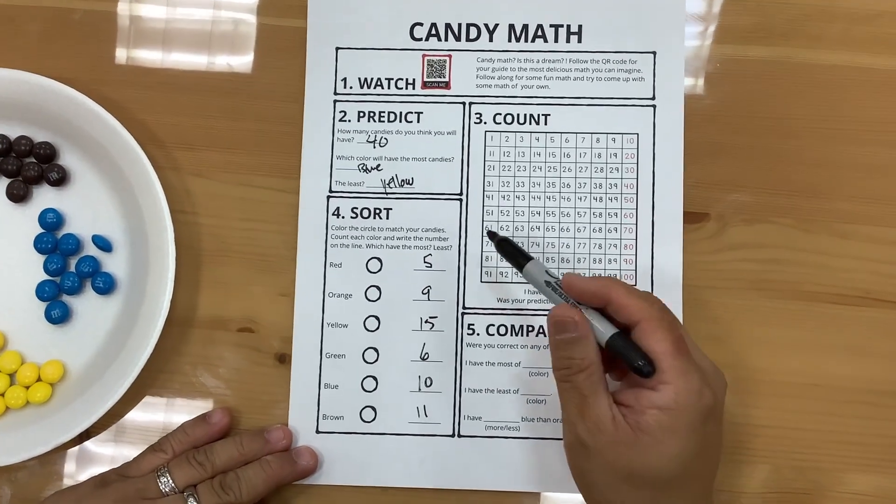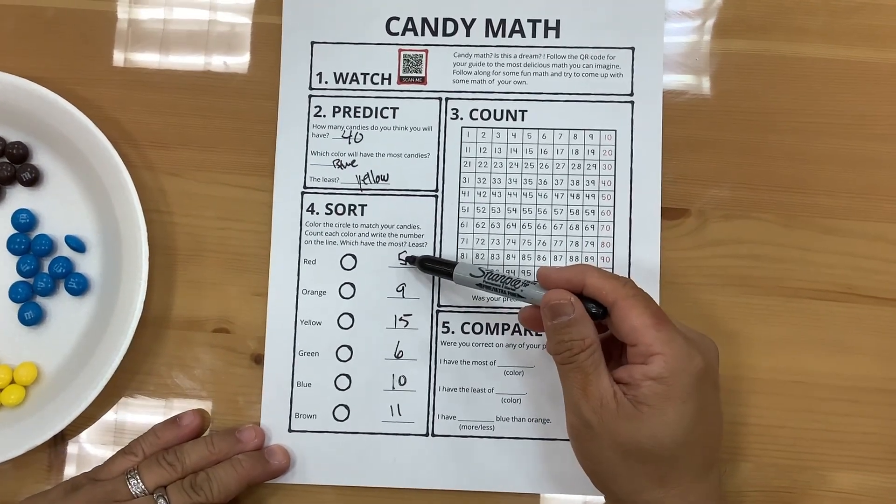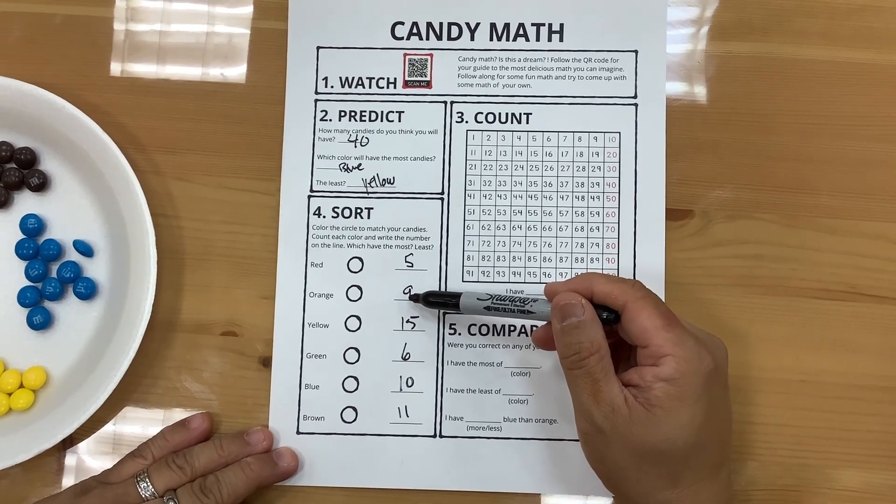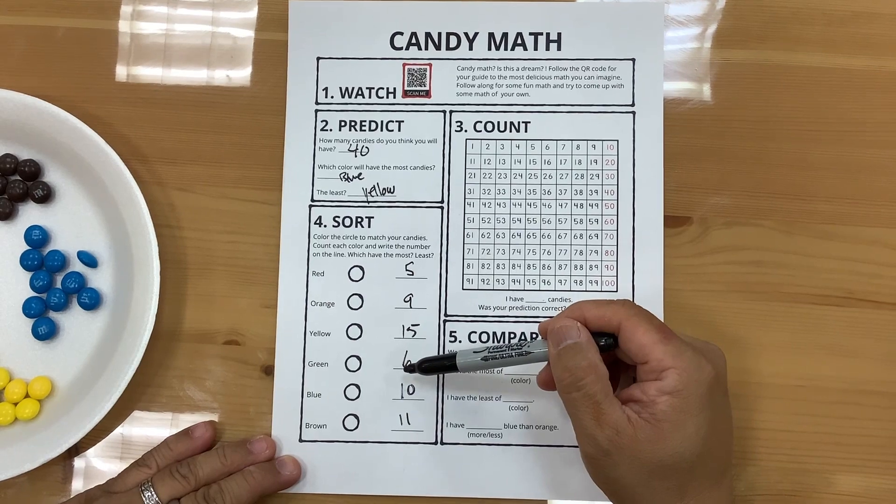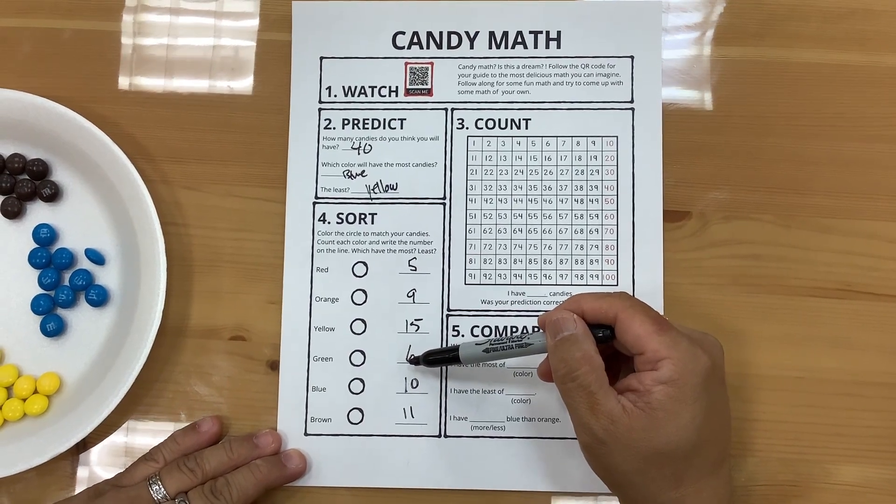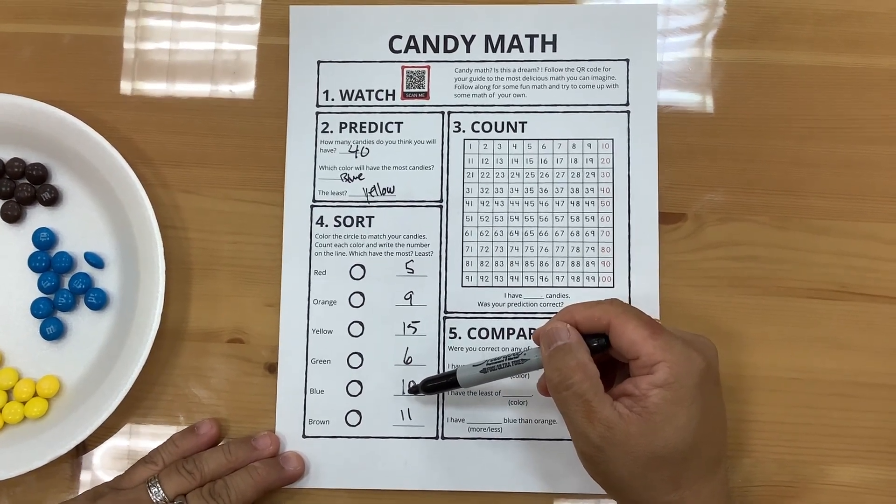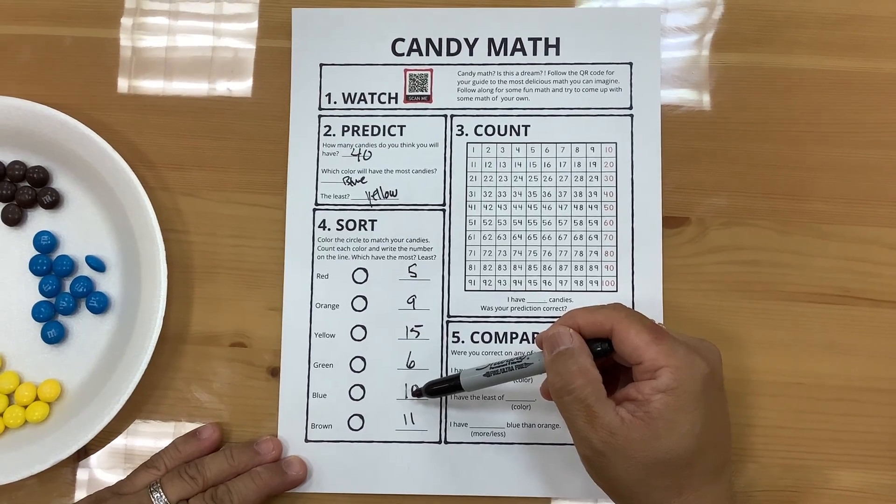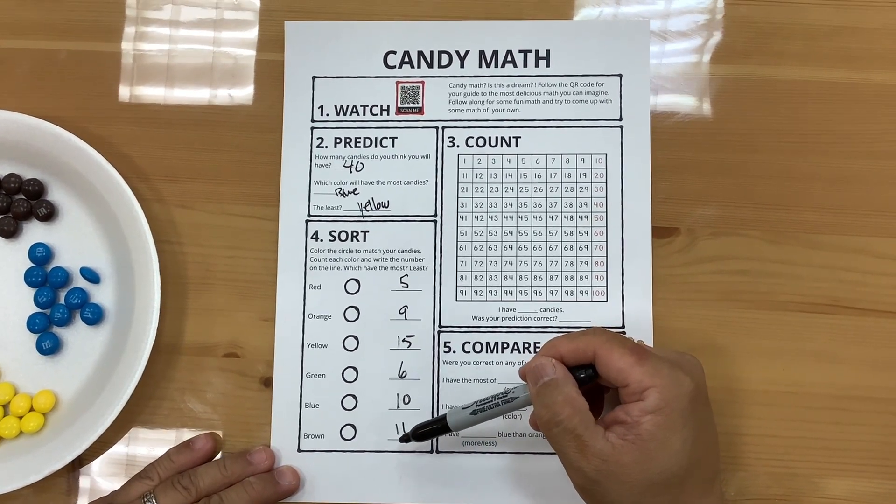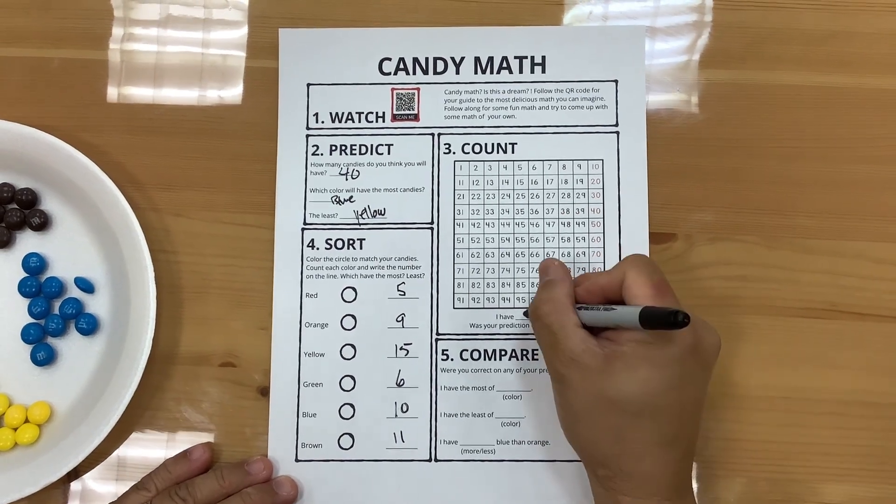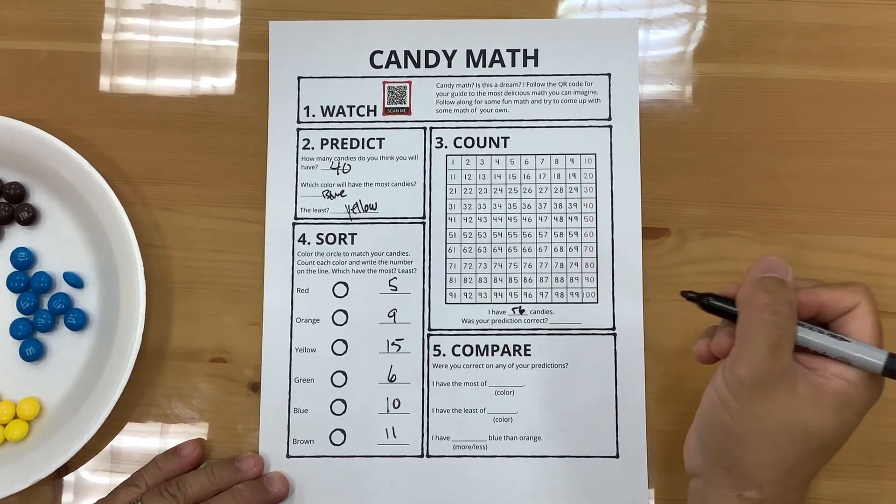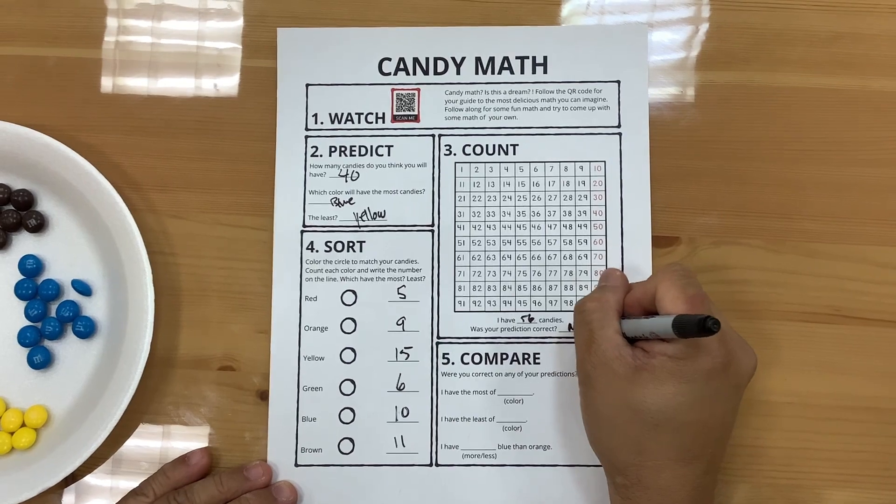So I had, once you add it up, 5 plus 9 is 14, plus 15 is 29, plus 6 is 35, plus 10 is 45, plus 11 is 56. Hmm. 56 candy. Was I correct? No, I was not correct.